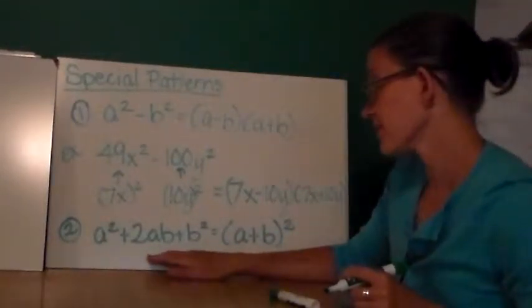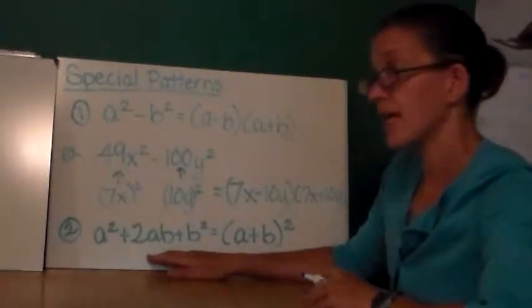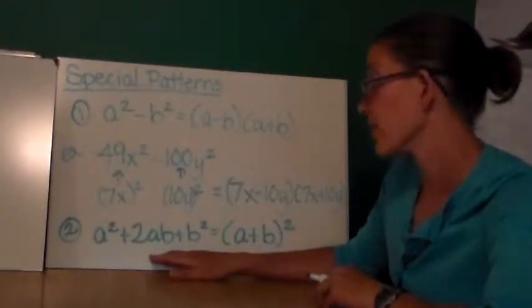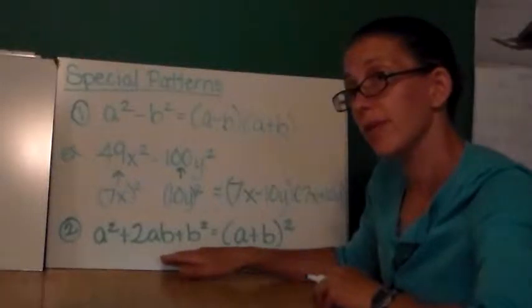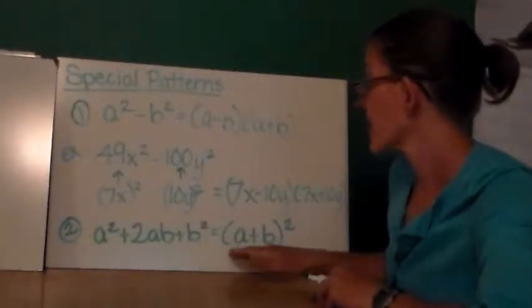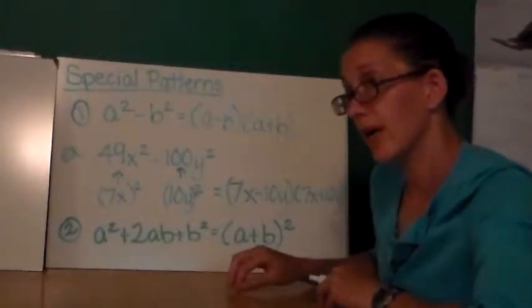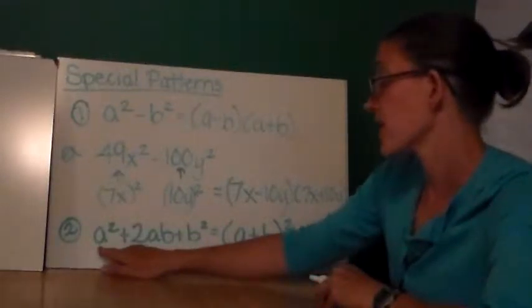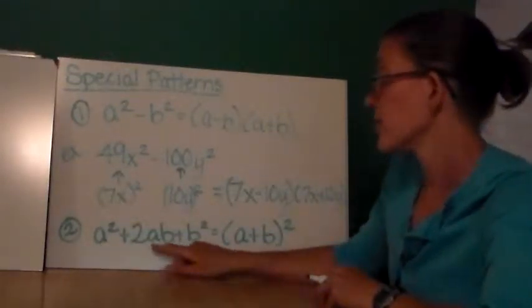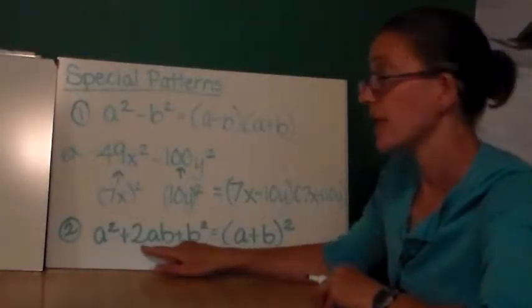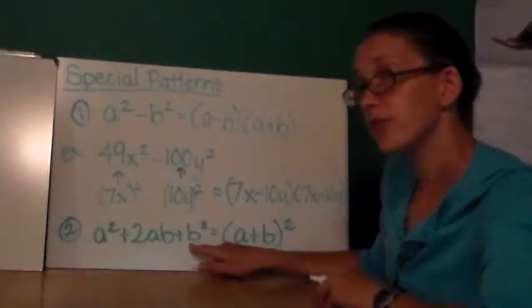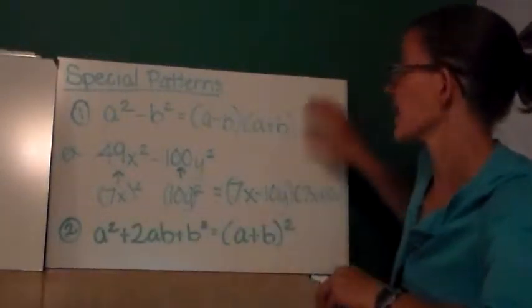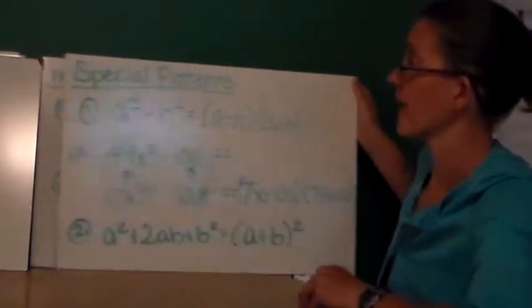This trinomial pattern is known as a perfect square binomial. We'll see this a lot when we learn about completing a square. a plus b quantity squared. To get this, you square a, you multiply a times b, then multiply by 2, and then you square b. You add them all together. That's another special pattern.